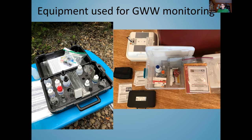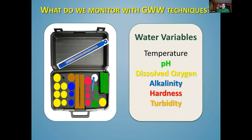This is the equipment used for water chemistry monitoring with Global Water Watch techniques. It consists primarily of a test kit made by Lamont, along with a few other items needed for monitoring. The kit is grouped into areas based on the different types of tests — all pH-related items are green, all dissolved oxygen items are yellow, and so on. Keeping it organized that way helps you pull things out quickly in the field.